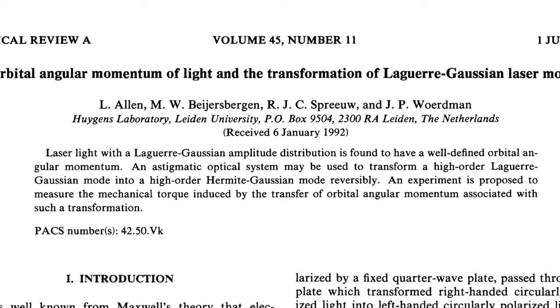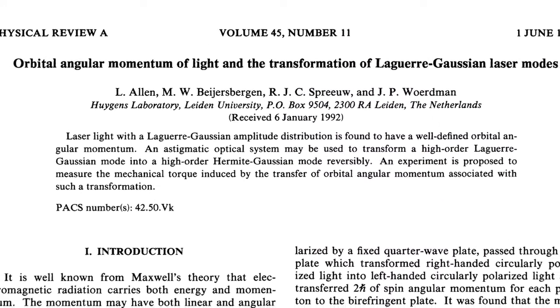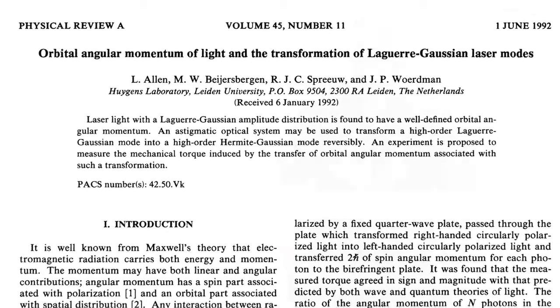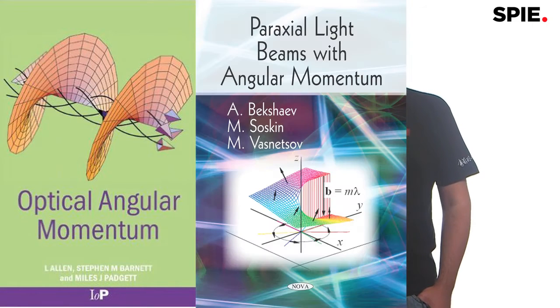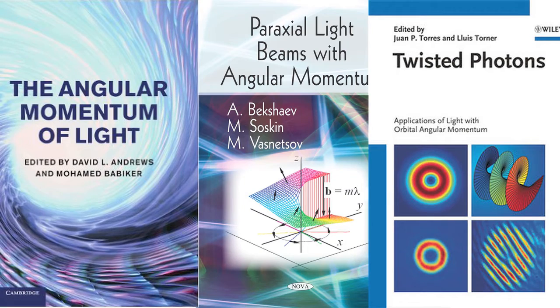Until in 1992, there was a really seminal work by Les Allen and other people published about the orbital angular momentum of light. And this is about so-called vortex beams, vortex phases, which produce orbital angular momentum. And this was like a real start of our field in modern times. So, since then, the field was growing very rapidly. And we have thousands of papers every year now about optical angular momentum.